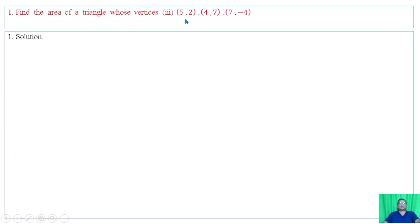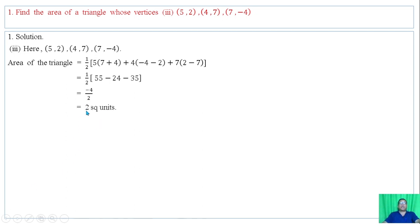Example 3: Find the area of the triangle with given vertices. Area of triangle is half x1(y2 minus y3) plus x2(y3 minus y1) plus x3(y1 minus y2). Substituting values we get minus 2, but taking absolute value the area is 2 square units.